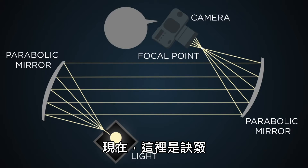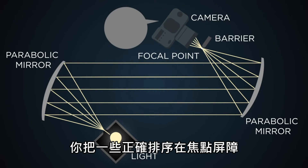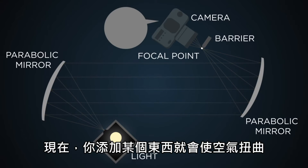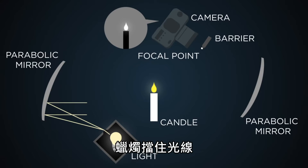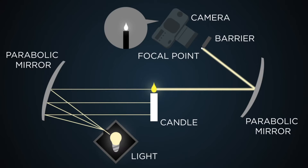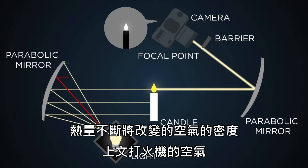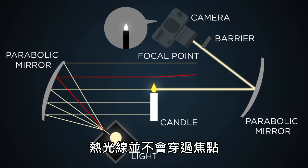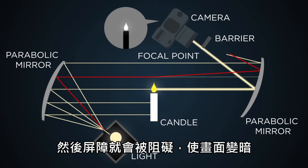Now here's the trick: you place some sort of barrier right at the focal point. Now you add something that will distort the air, like a candle. The candle will block light rays, making a silhouette, and the flame will make light. But rising heat will change the density of the air above the lighter, and that will bend the light rays. The bent light ray won't pass through the focal point — it will be blocked by the barrier, and the picture will be darker.